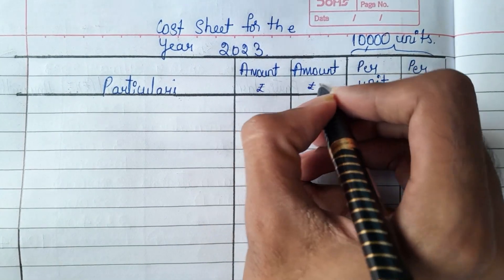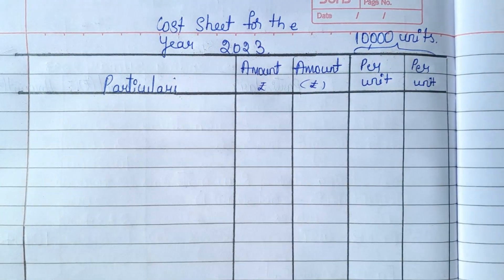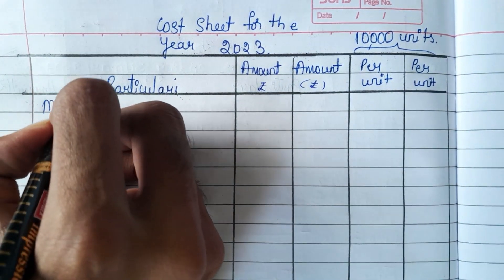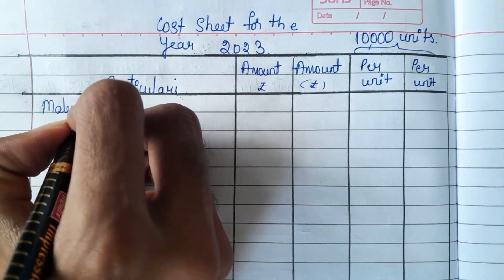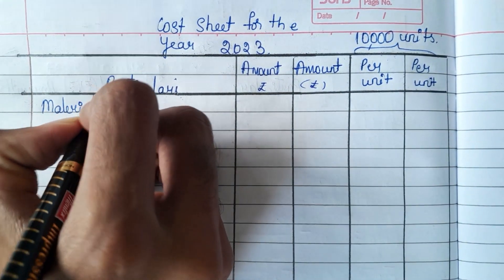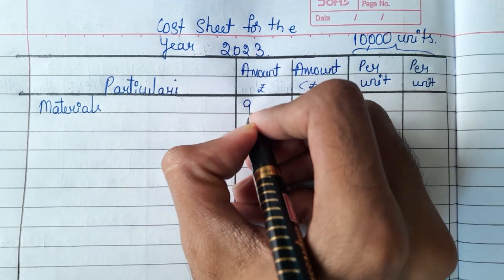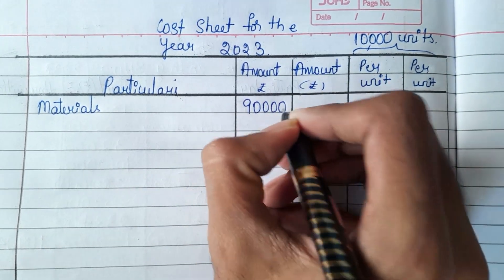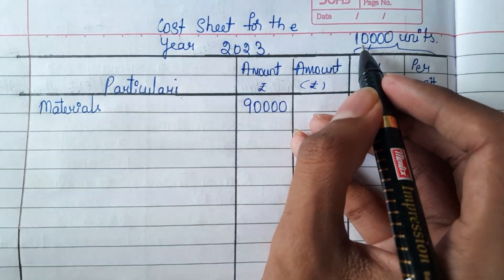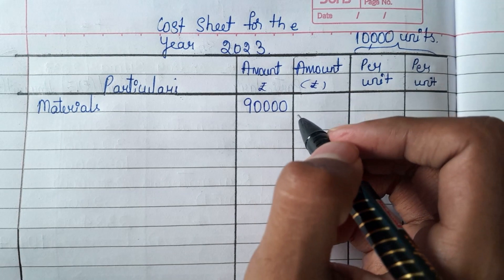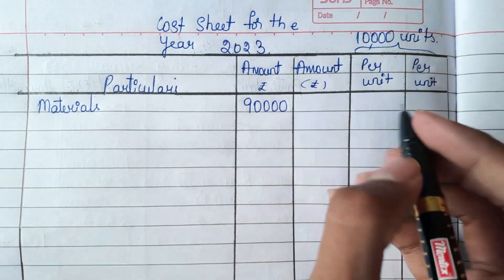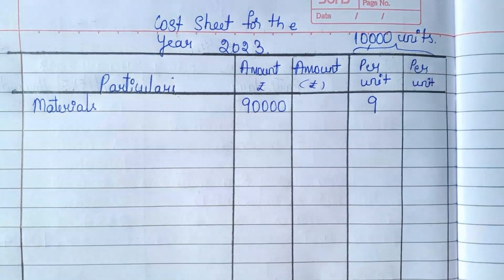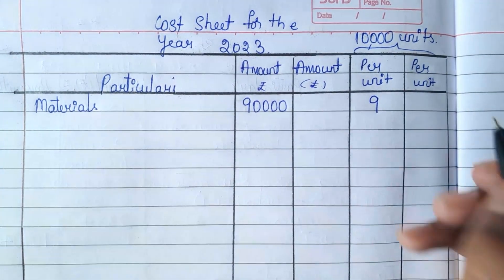Now, how to solve this? First, we have to take materials. How much is the materials? It is 90,000. This 90,000 is for 10,000 units. For one unit, I should divide it by 10,000, and I will get 9.